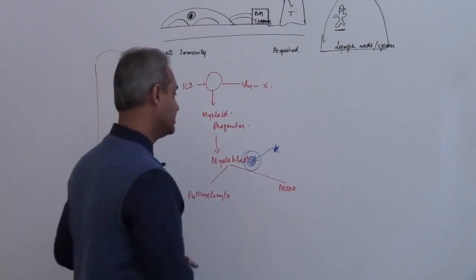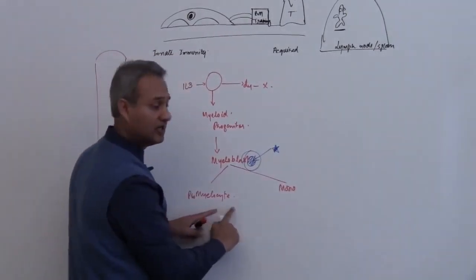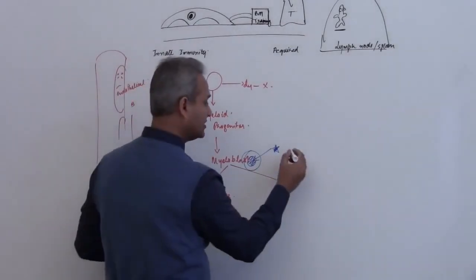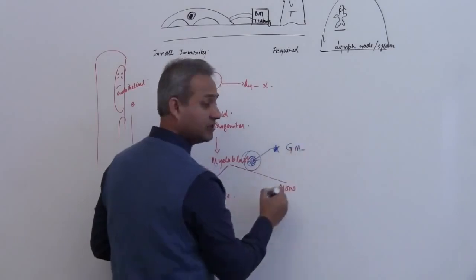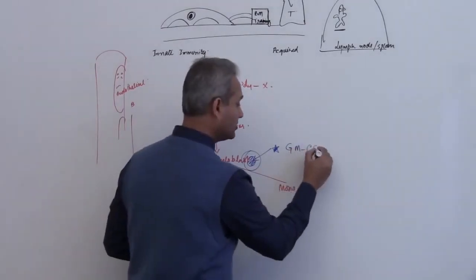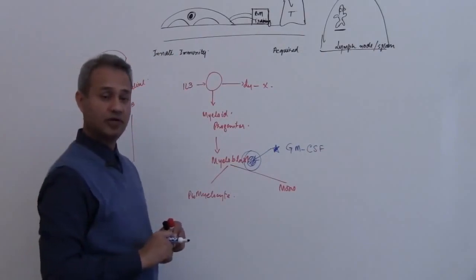Correct. So this is called, what is it doing, increase the granulocyte, monocyte, increase the monocytes. So can I say granulocyte, monocyte, colony stimulating factor, colony stimulating factor.